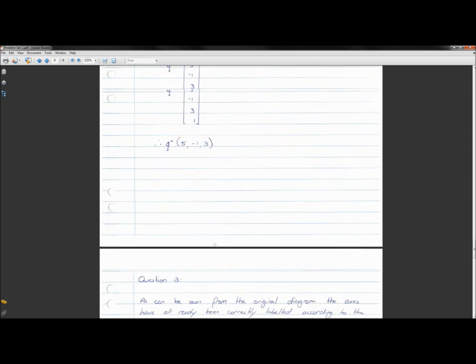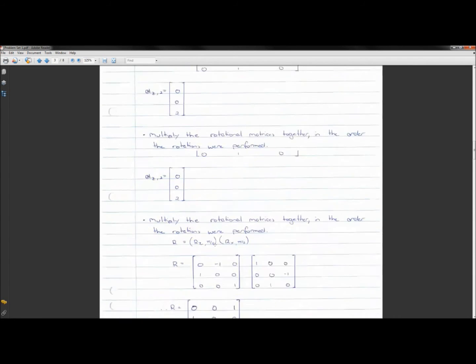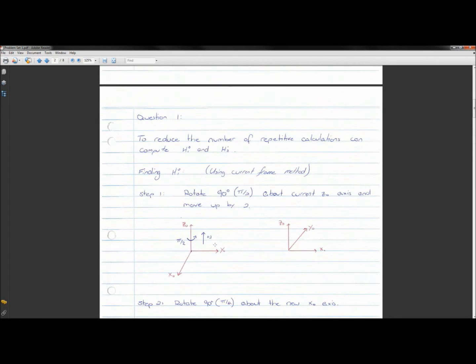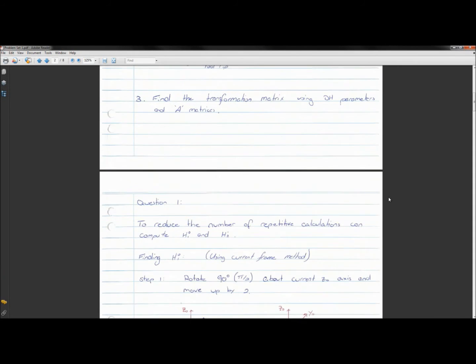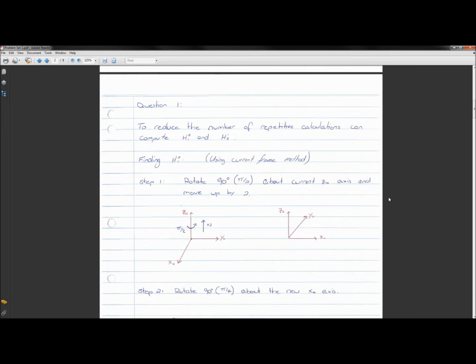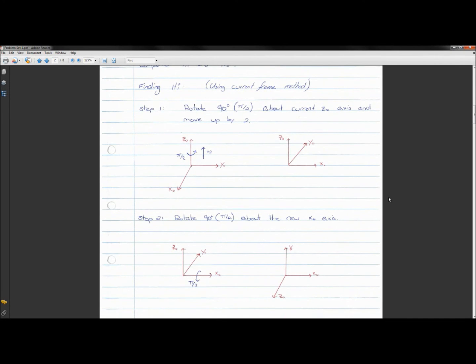The final question was, let me go back to it, just so you guys can see it again. Find the transformation matrix using DH parameters and A matrices. So some guys in robotics a while ago, they were kind of sick of doing these homogeneous transforms, and they wanted to try and find a generalized matrix that you could use for any configuration sort of robot, or anything like that, to relate two reference frames to each other, whether that be 1 to 0, or 1 to 2.